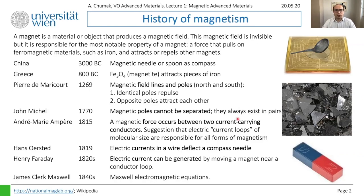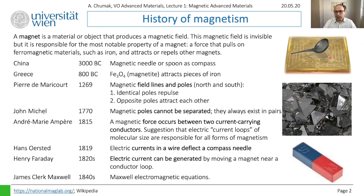The first mention of magnets goes back to 3000 years before Christ in China — though some sources cite 300 BC. Archaeologists discovered a magnetic spoon which may have been used as a compass for navigation, though there is debate: critics say it was too heavy to rotate on a desk, while others suggest it could float on water.